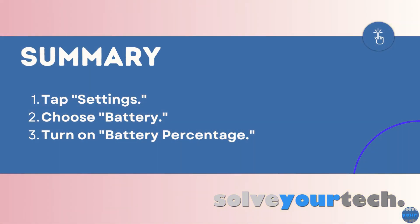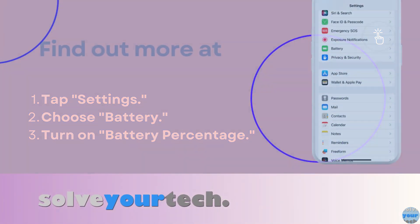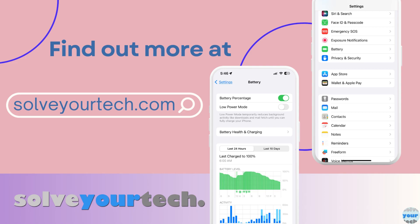To summarize, when you want to show the battery percentage on your iPhone, you need to open the Settings app. Scroll down and select battery, then tap the button to the right of battery percentage to turn it on. Make sure to like this video and subscribe to our channel to see more tech guides like this. For additional information on this topic and to read the entire article, click the link in the description to visit SolveYourTech.com.